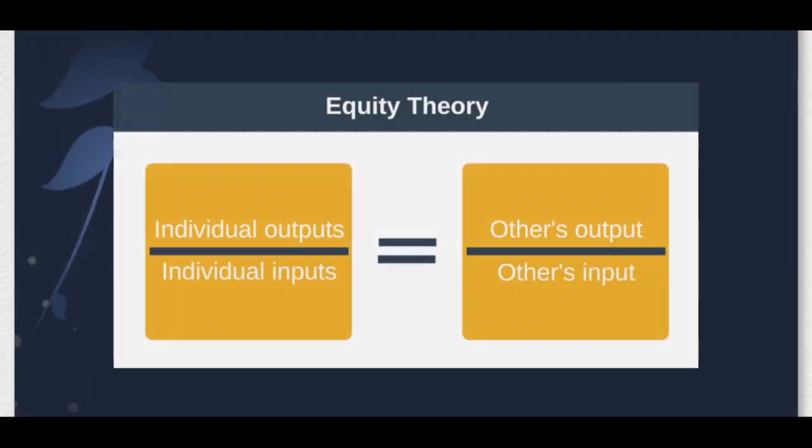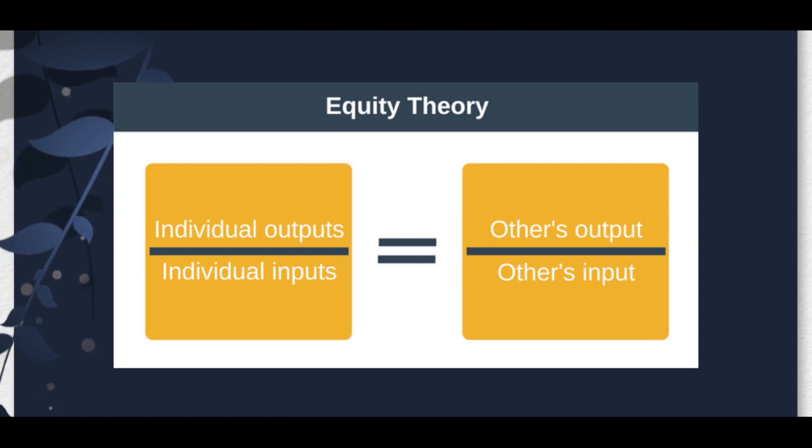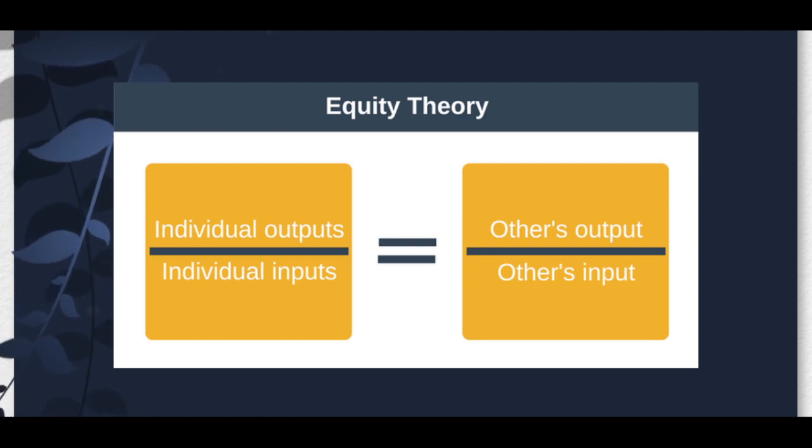Another motivational theory is the Equity Theory by John Adams, introduced in 1963. This theory is about fair treatment — human beings value fairness, and an employee will measure and compare their input and output with co-workers', and will be motivated when treated equally.